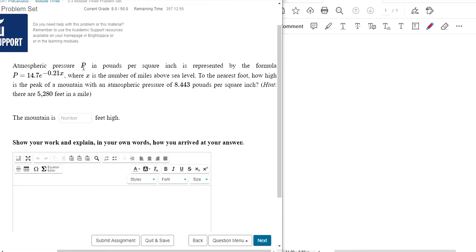Okay, so we're told atmospheric pressure P in pounds per square inch is represented in this formula where X is the number of miles above sea level. So they tell us the pounds per square inch, 8.443. And then we have to solve this equation for X, which means we need a logarithm. X is in the exponent position.